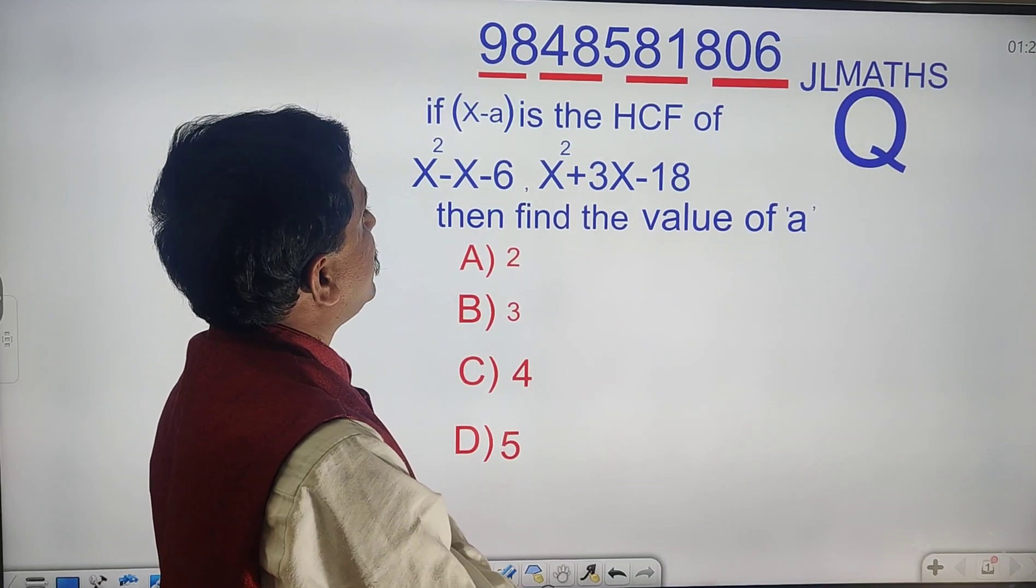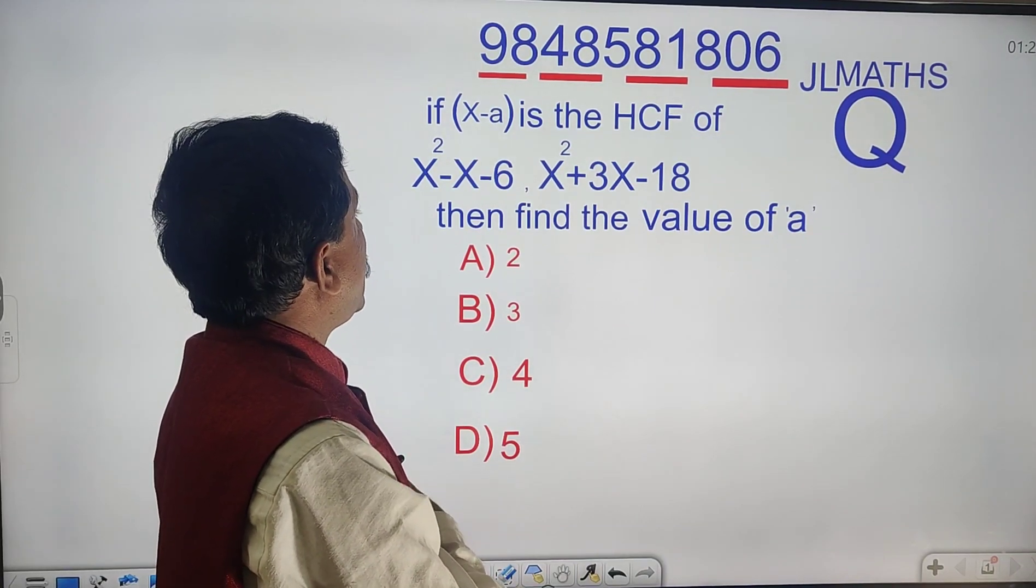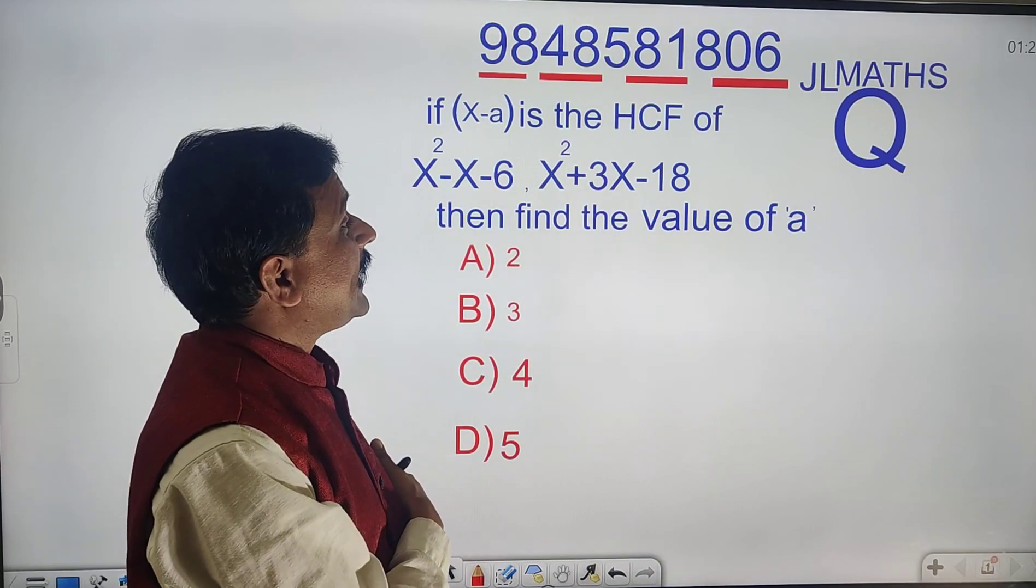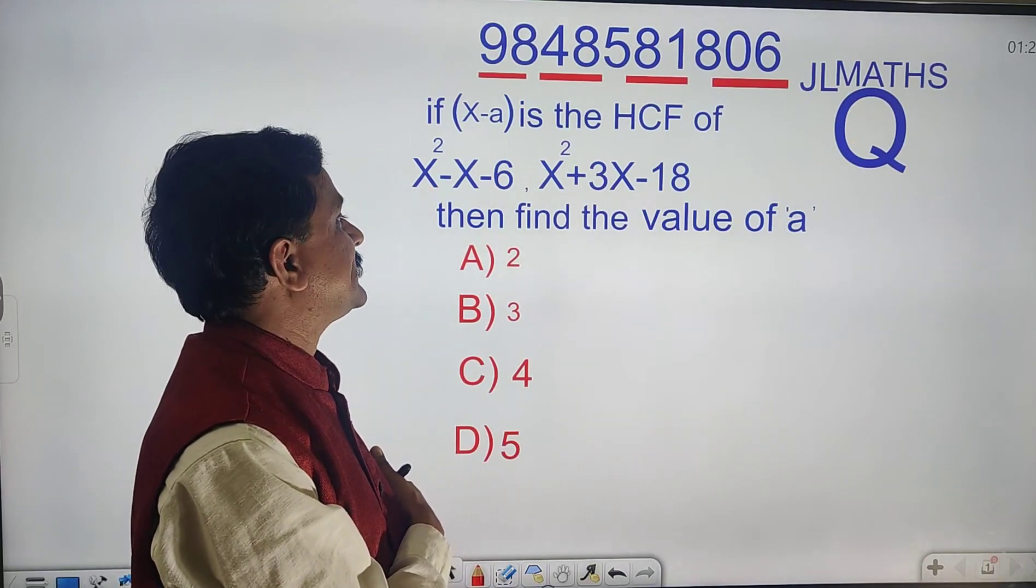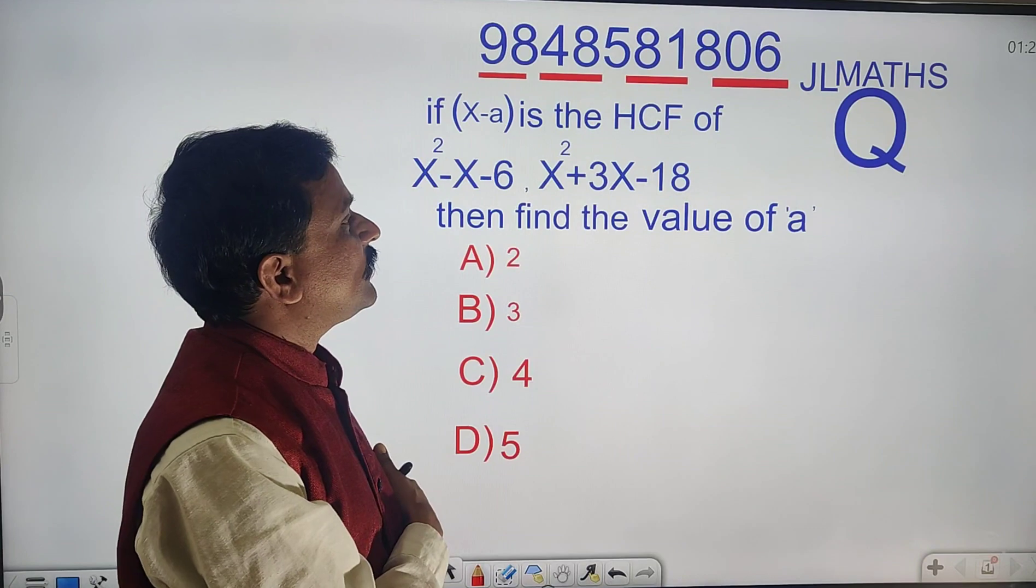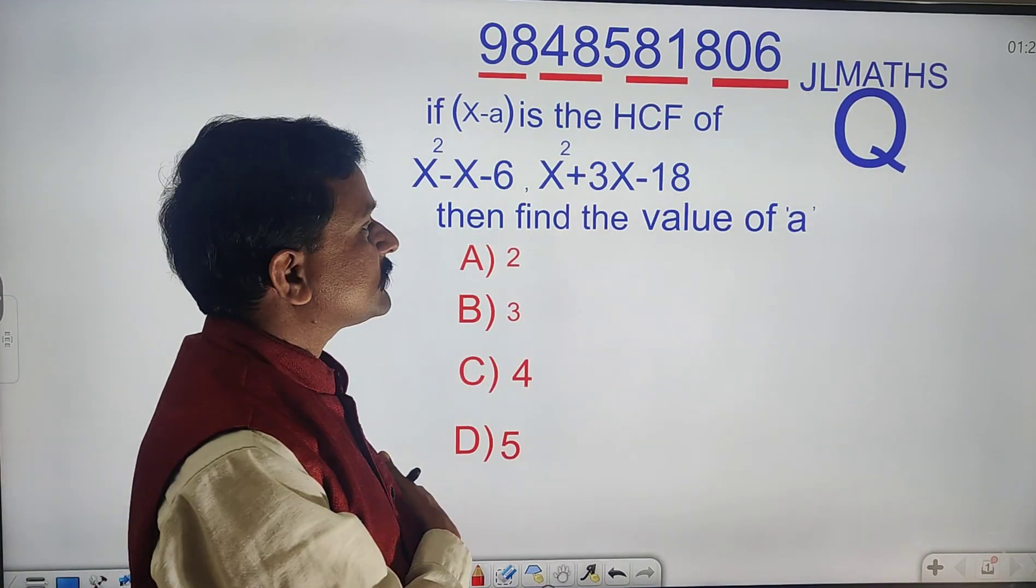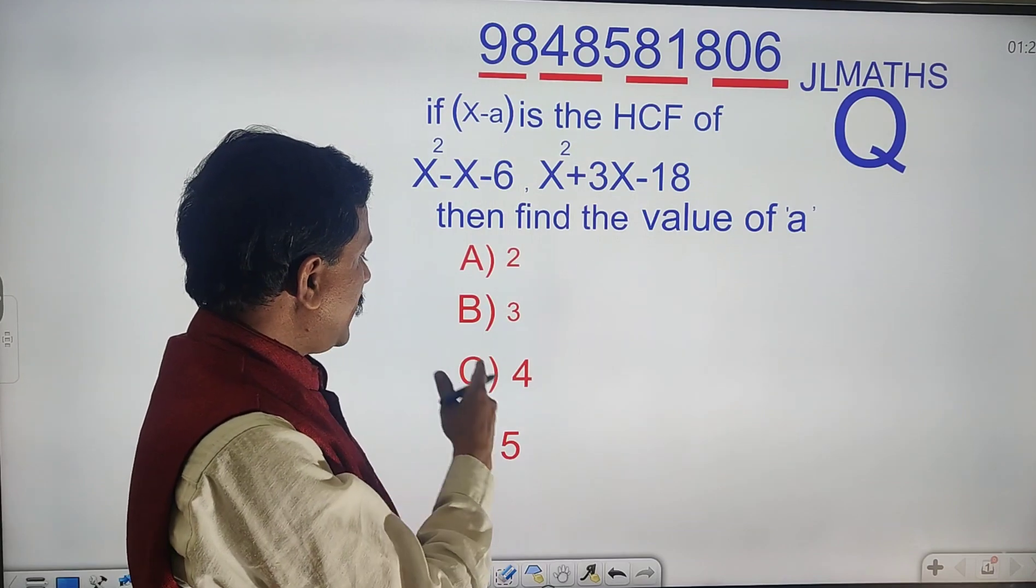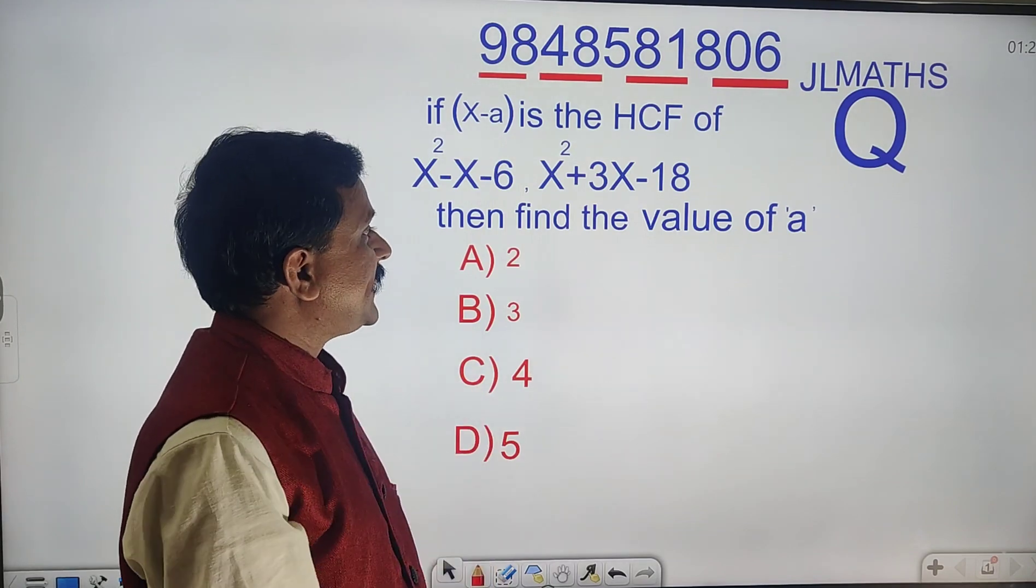If x minus a is the HCF of x square minus x minus 6 and x square plus 3x minus 18, then find the value of a. Option A: 2, option B: 3, option C: 4, option D: 5.